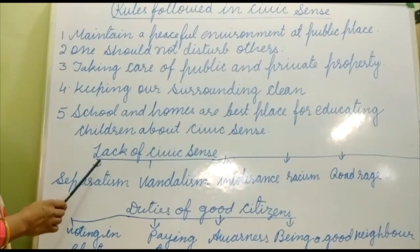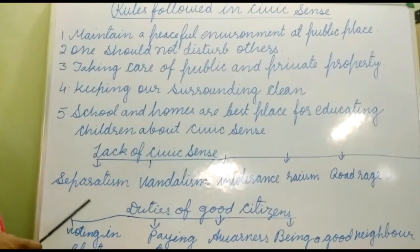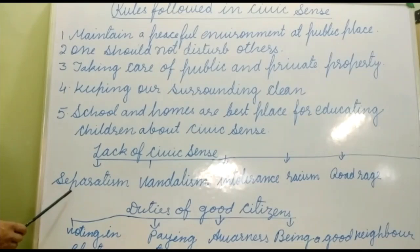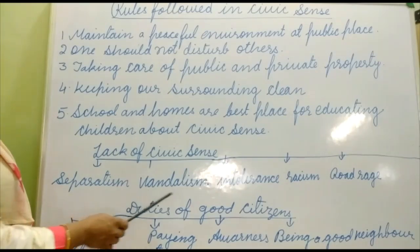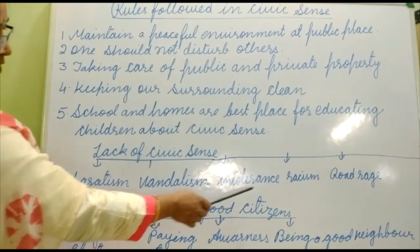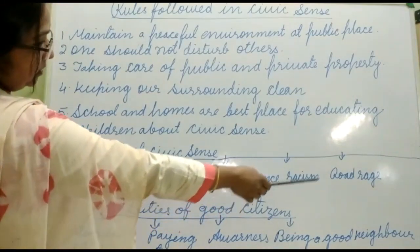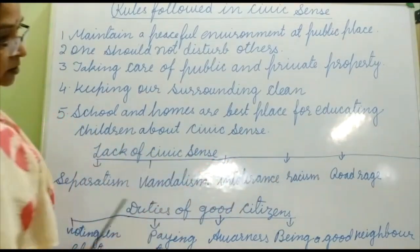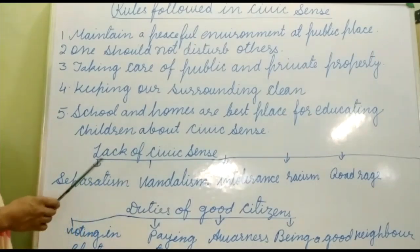Now we will discuss the lack of civic sense — where our civic sense is lacking. The areas are: separatism, vandalism, intolerance, racism, and roadways. These are the places where our civic sense is lacking.